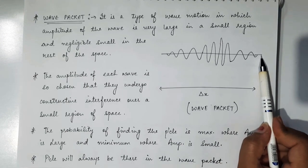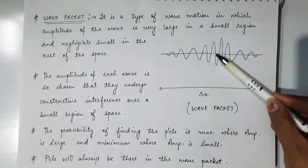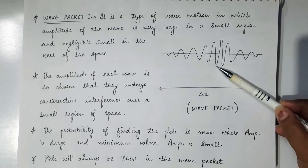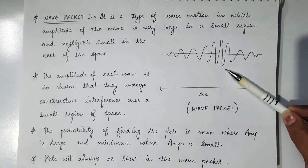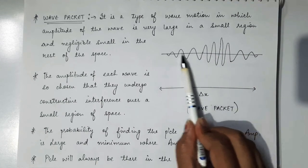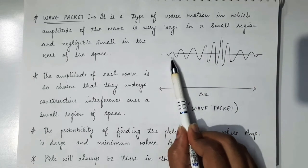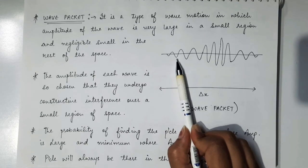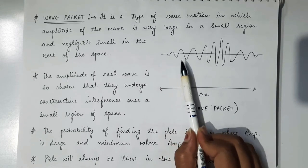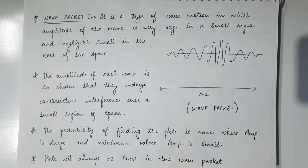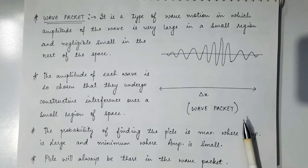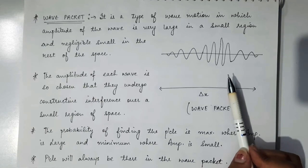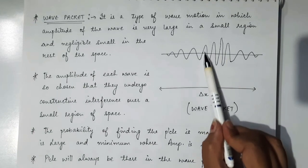Wave packet is a type of wave motion in which the amplitude of the wave is very large over a very small region, and in the rest of space the amplitude is very small. The amplitude of each wave in the group is chosen so that all the waves undergo constructive interference over a very small region.